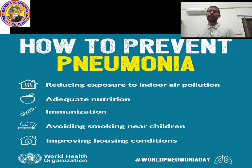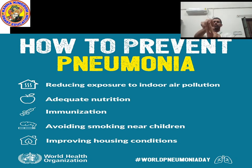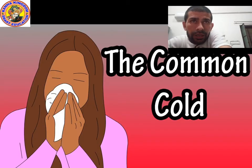So the prevention points are: reducing exposure to indoor air pollution, adequate nutrition, immunization, avoiding smoking near children, and improving housing condition. These are the five prevention methods for pneumonia.